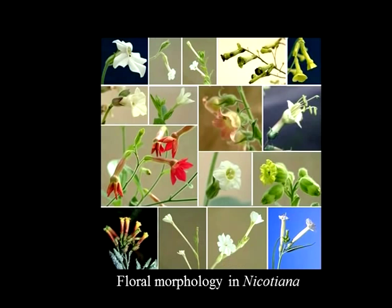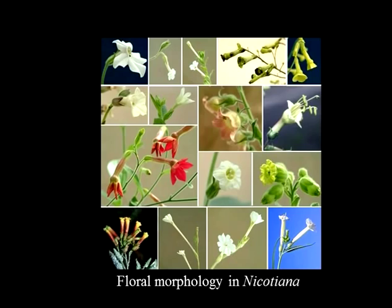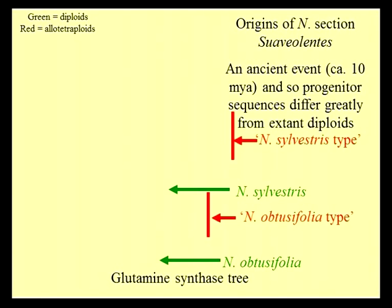Just to show you what Nicotianas look like — they don't all look like Nicotiana tabacum. There's quite a bit of floral diversity and pollinator relationships. Now, the background for understanding the evolutionary history of these allotetraploid groups is shown with this low-copy nuclear gene, just showing the section. Section Suaveolentes has two copy types from its parents: a sylvestris sequence and an obtusifolia-type sequence. These are about 10 million years old, so they've diverged fairly strongly from the parental sequence.